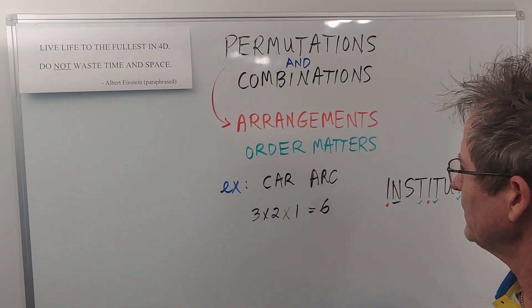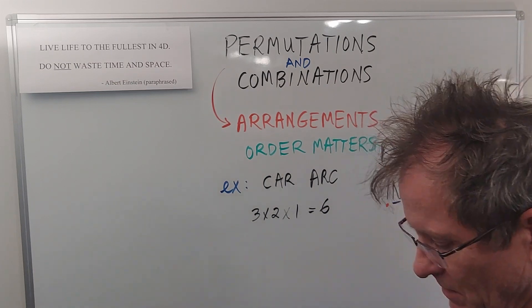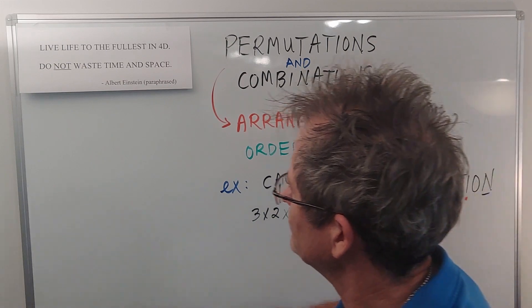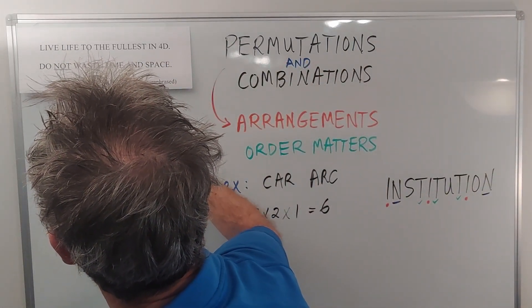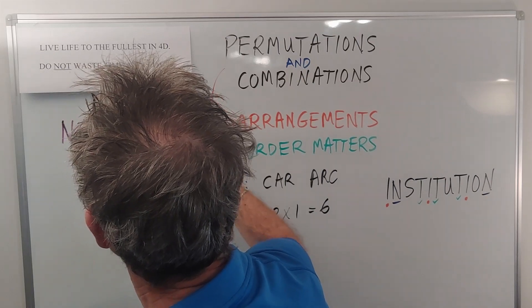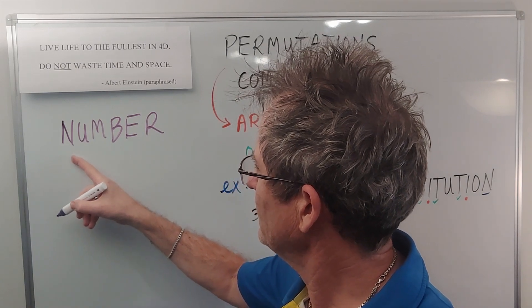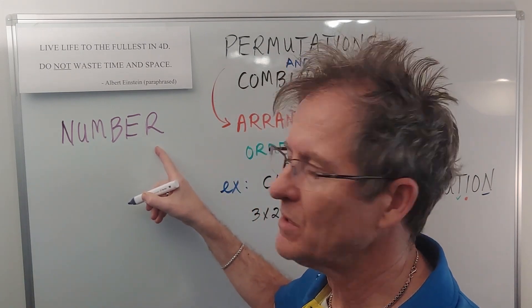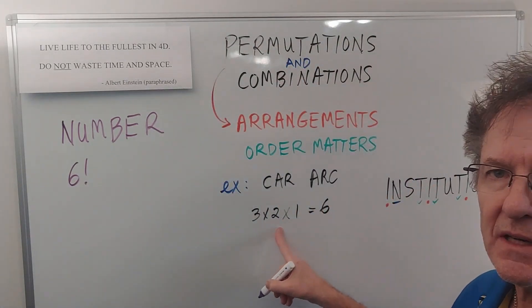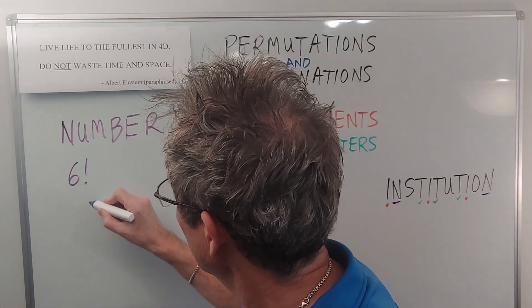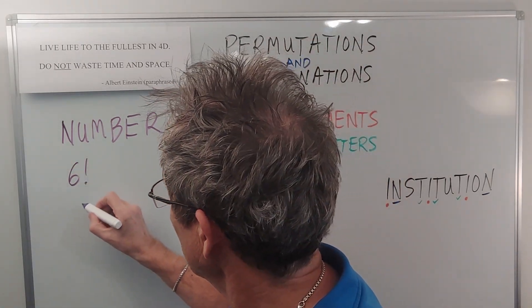Now let's consider the word NUMBER - six letters. So if we figure out the total number of arrangements using all six letters, it's going to be six factorial. Similar reasoning to this over here, but what if we only choose four of them, any particular four? Well then it would be six times five times four times three.